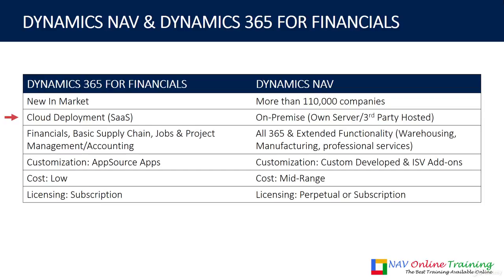Dynamics 365 is available on SaaS — Software as a Service — so you don't need any infrastructure on your premises; you can just sign up and start using it. Whereas Dynamics NAV on-premise has an option to install on your own servers, and you can also host it on third-party services, which acts as SaaS. So either you install it on your server or deploy it on a third-party hosted solution and access it using a browser.